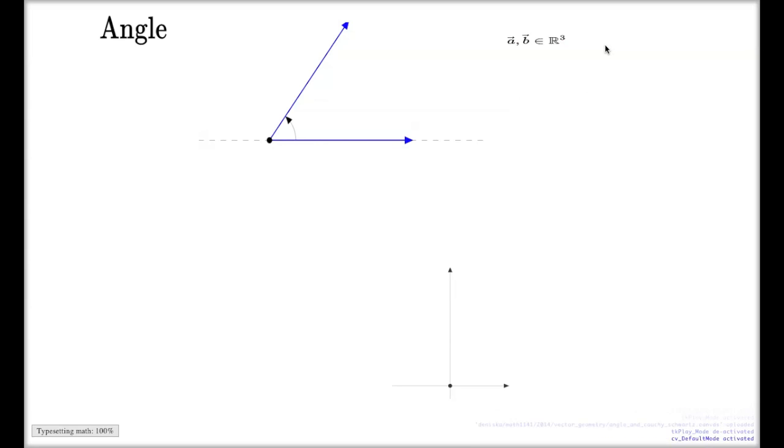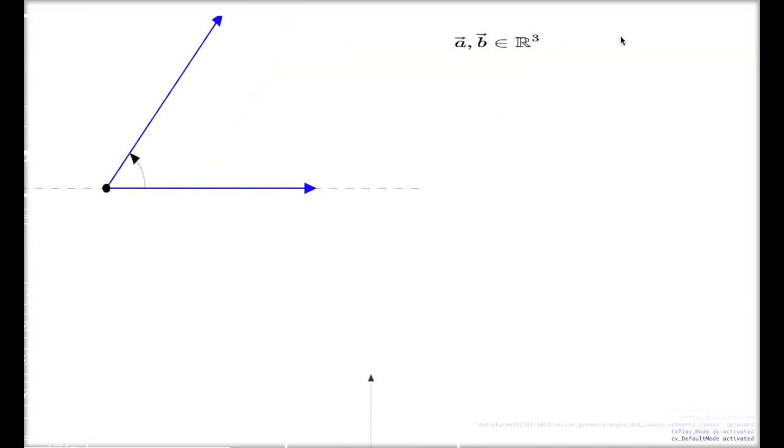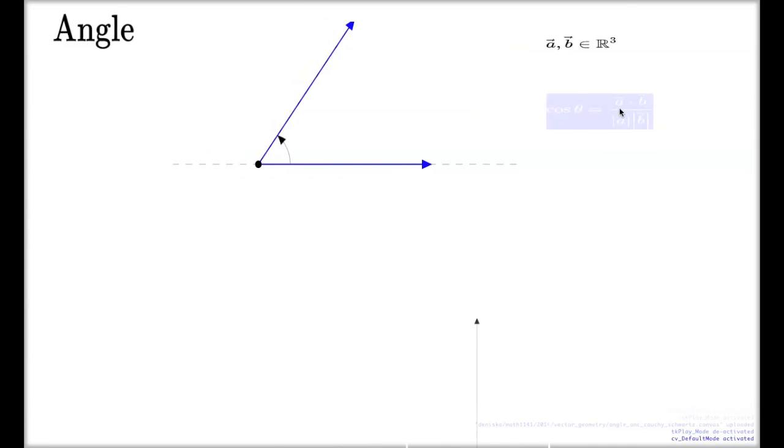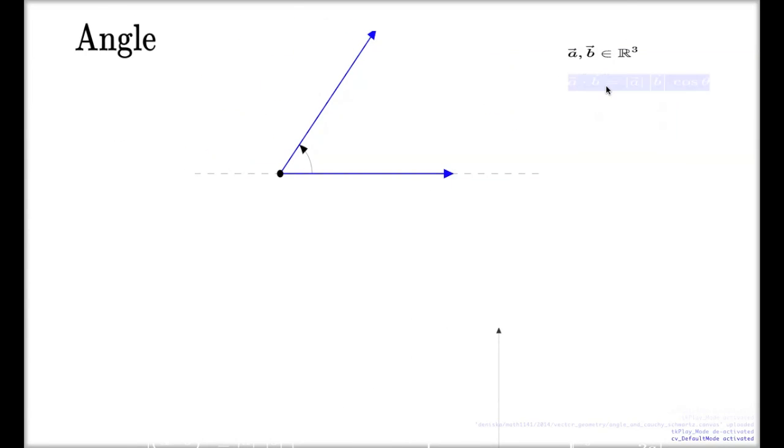In three dimensions, if you have two vectors in three dimensions like this, there is an alternative way to compute the dot product. There is one, of course, when you do the components of the vectors, you multiply them one with another and add them up. That's one way to compute the dot product. There is another way in three dimensions.